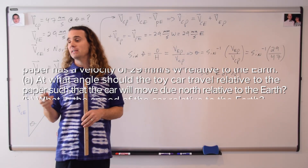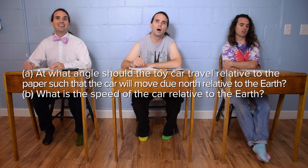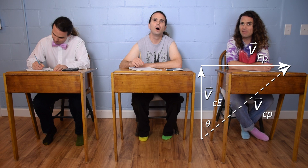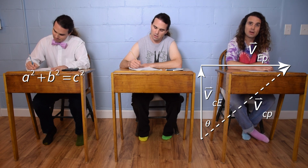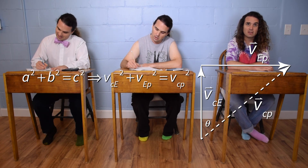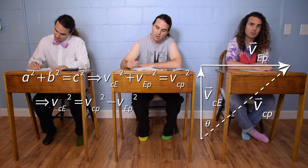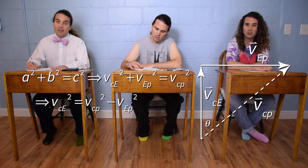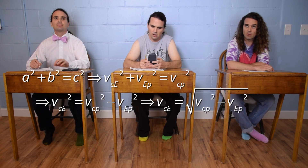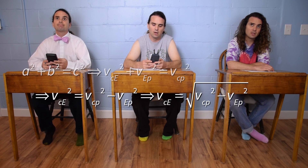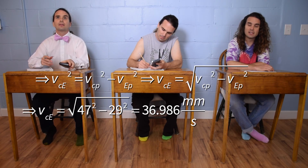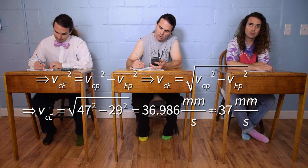Bo, please read, translate, and solve Part B. Part B: what is the speed of the car relative to the earth? We need to solve for the magnitude of v sub c-e. We have a right triangle, so we use the Pythagorean theorem: v sub c-e squared plus v sub e-p squared equals v sub c-p squared. Subtracting and taking the square root: v sub c-e equals the square root of 47 squared minus 29 squared, which equals 36.986, rounding to two sig figs to 37 millimeters per second.